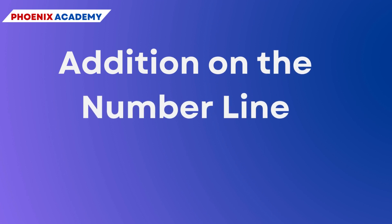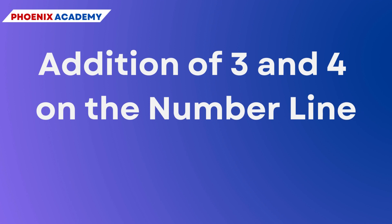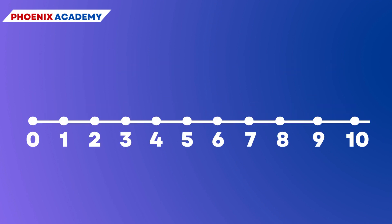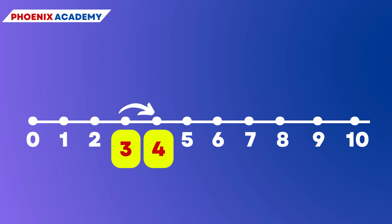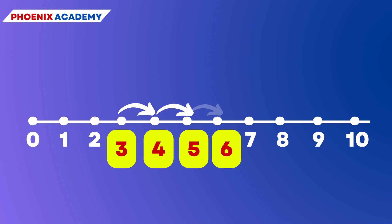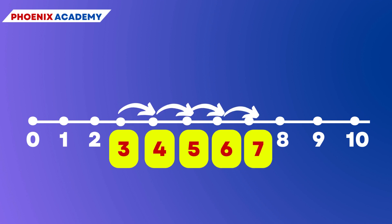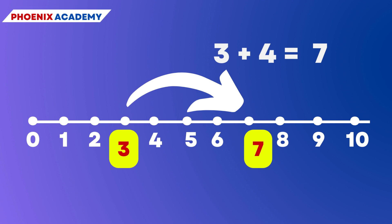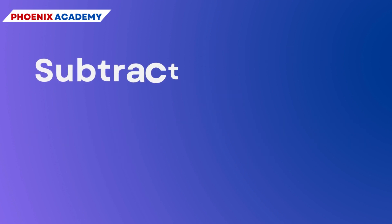Now let's see how to do addition on the number line. Addition of whole numbers can be shown on the number line. Let us try the addition of 3 and 4: start from 3, and since we add 4, we make 4 jumps to the right — from 3 to 4, 4 to 5, 5 to 6, and 6 to 7. The answer is 7.